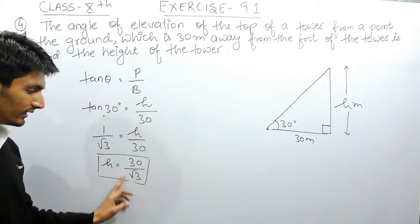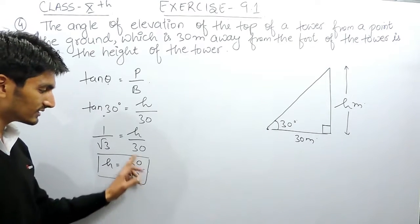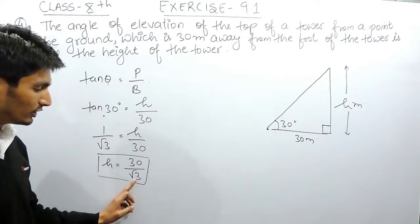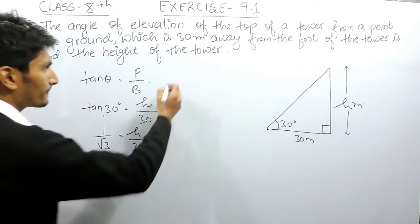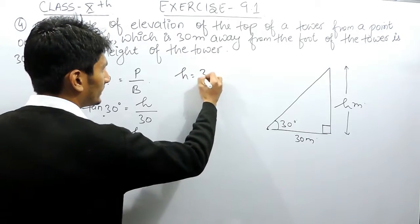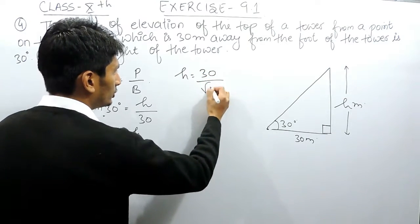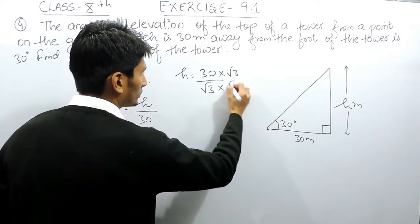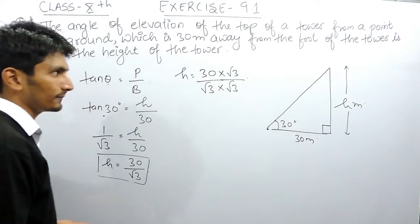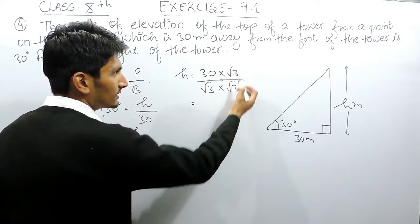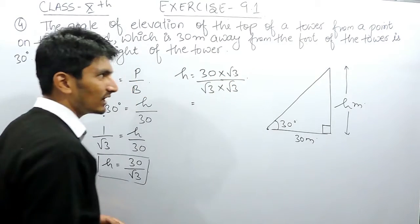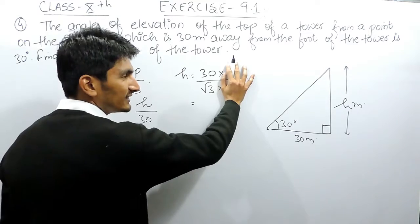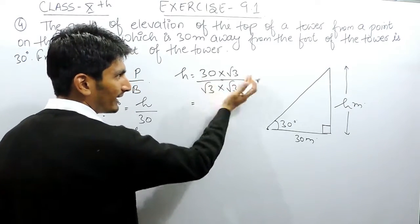I have already discussed that whenever there is a root in the denominator, to solve this expression you have to rationalize it. This means you have to multiply root 3 with both the denominator and the numerator. If we cancel this out, the expression will remain the same, so this won't make any change.